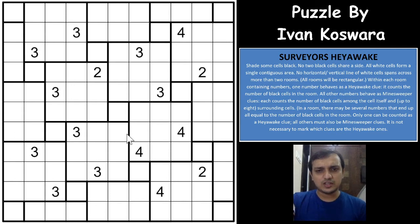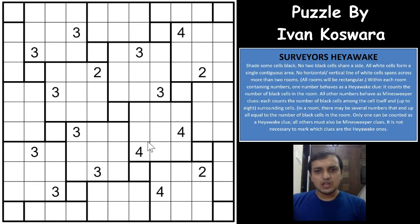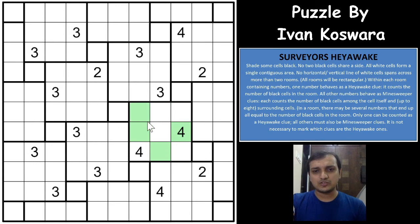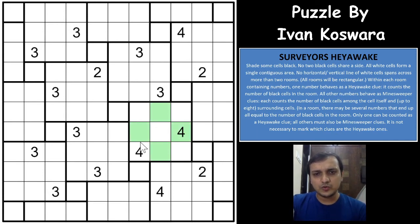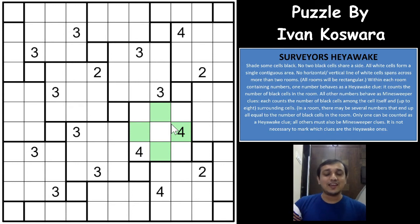Now if you see this region has both 4s, which means one of the 4s will be a Minesweeper clue and the other 4 will have to be a Heyawake clue. We don't know which one is which yet. But we surely know that whatever the Heyawake clue is, out of the 9 cells, 4 cells will be shaded and the 4 middle-edge cells cannot be shaded. So out of the remaining 5 cells, 4 cells will have to be shaded. This means we know one of these 4s is a Heyawake clue and all 4 of those cells will be shaded — that's an excellent start logic.